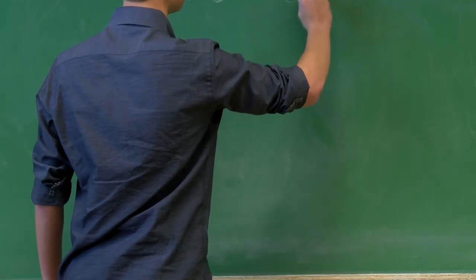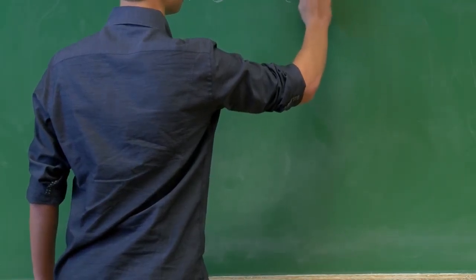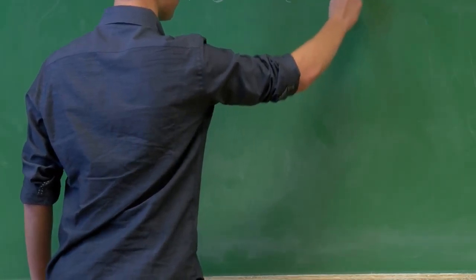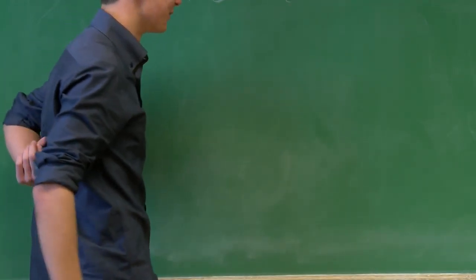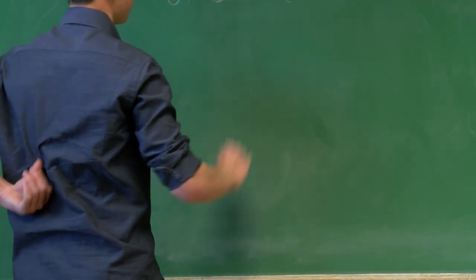So we're going to start with an equation: 2 plus 3x plus y equals 0. And then we're going to try and get y alone. That was a pretty bad y. We're going to try and get y alone.